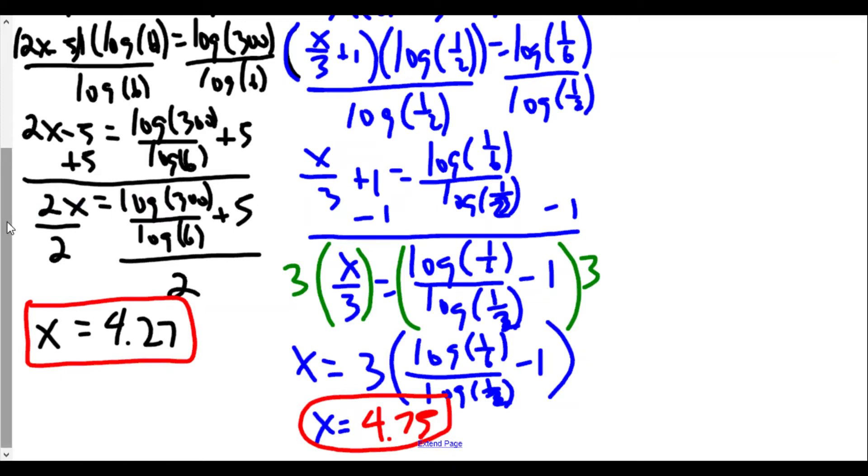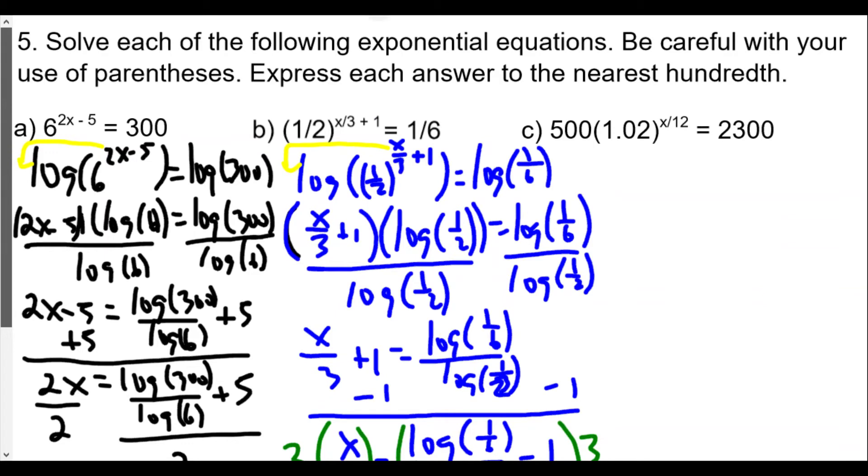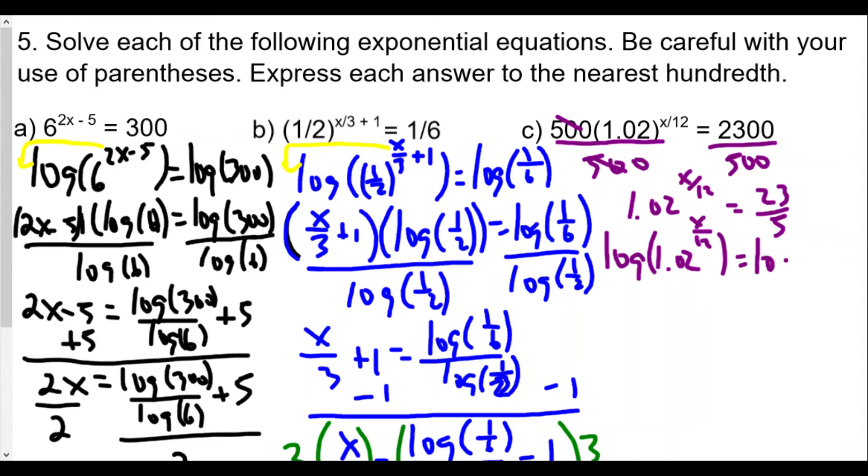Now for the next one, last one for this question here. Very similar to previous problems. We have 500 times 1.02 raised to x/12 equals 2,300. Because we want to get 1.02 raised to x/12 by itself, we're going to divide both sides by 500. Now when we divide both sides by 500, we're going to get 2,300 over 500 which gives us 23/5. So we get 1.02^(x/12) is equal to 23/5.